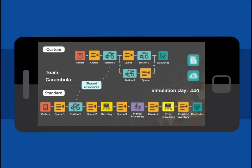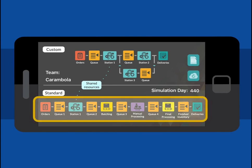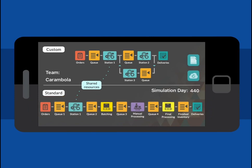What you see here is the main layout of the virtual company we present the students with. It has two different production lines: a standard one at the bottom and one for custom-made products at the top.